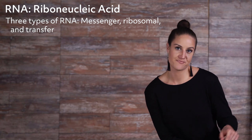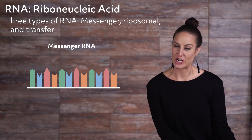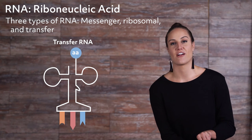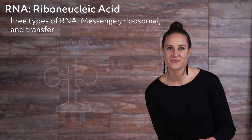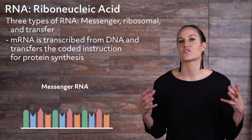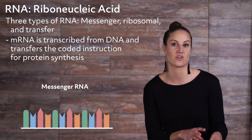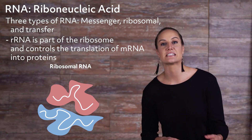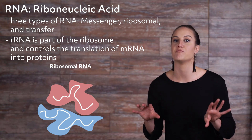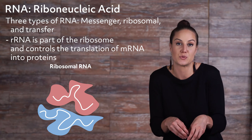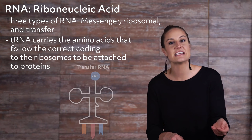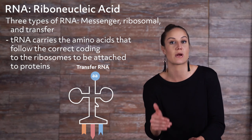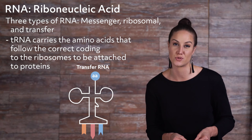There are three types of RNA: messenger RNA or mRNA, ribosomal RNA or rRNA, and transfer RNA or tRNA. mRNA is transcribed from DNA, and it transfers the coded-in structure for protein synthesis. rRNA is a part of the ribosome, and controls the translation of messenger RNA into the proteins. tRNA carries the amino acids that follow the correct coding to the ribosomes to be attached into the proteins.